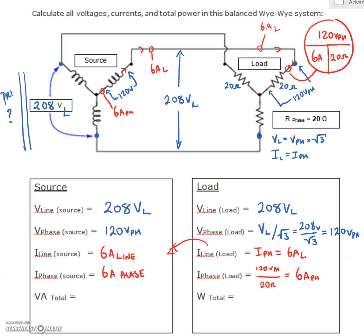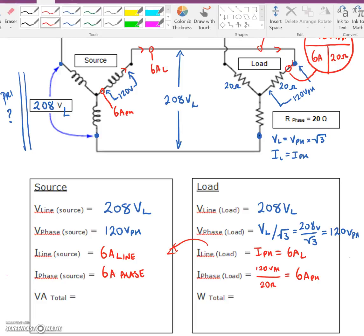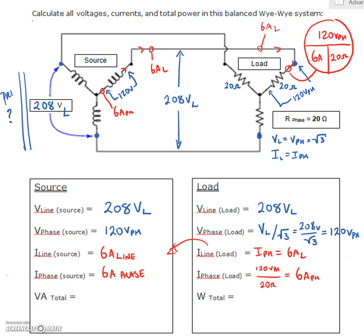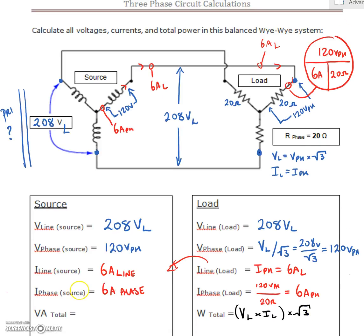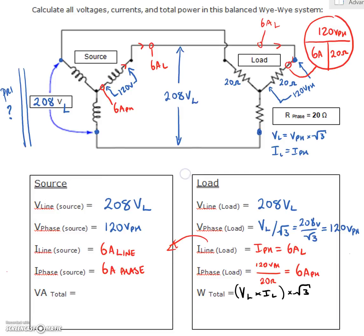Now all we need to do is find our power values. So with those guys, our equations, there's two equations we can use. We can use V line times I line times root 3. Or we can use V phase times I phase. And if we're using our single phase values, we're going to multiply it by the three single phase windings.